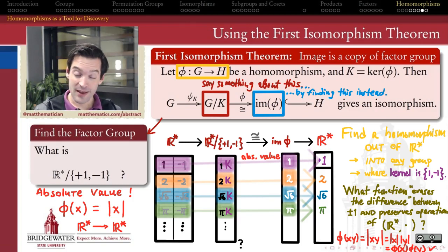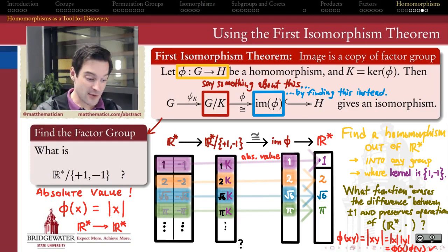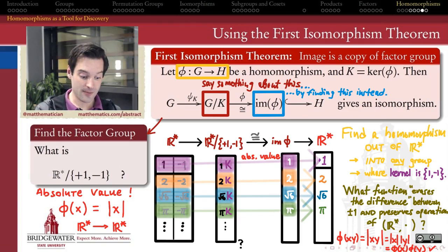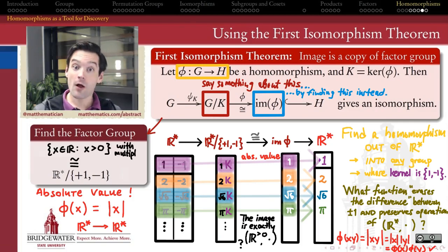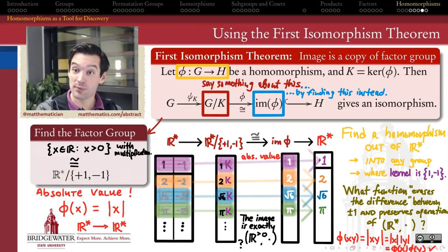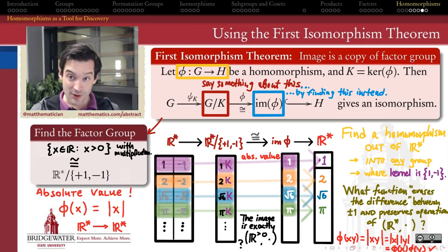As any high school algebra student knows, the absolute value of any nonzero real number is always a positive real number. So the image of phi is not all of R*, but consists exactly of all the positive real numbers inside R*. Because the First Isomorphism Theorem tells us the image of this homomorphism is isomorphic to the factor group, the factor group R*/{+1,-1} is isomorphic to the group of all positive real numbers under multiplication. When you blur the distinction between positive and negative, you can think of everything as positive—and that's both a good algebra lesson and a good lesson for life.